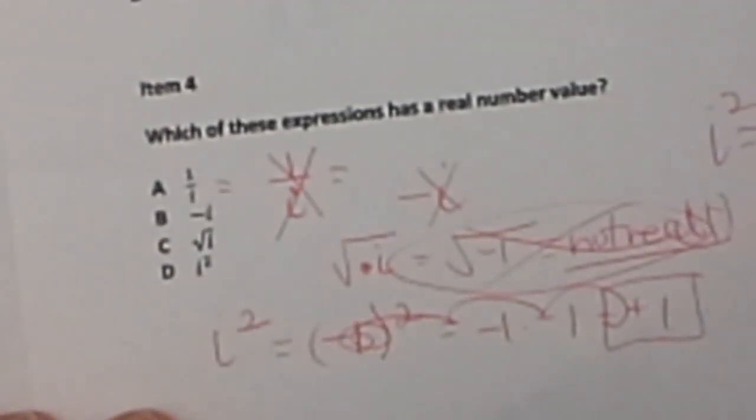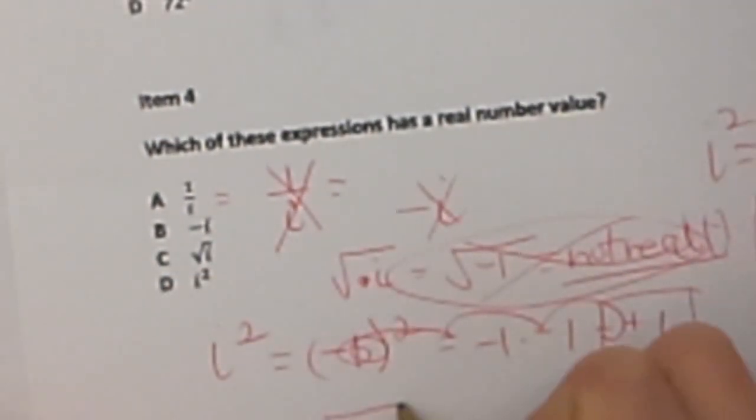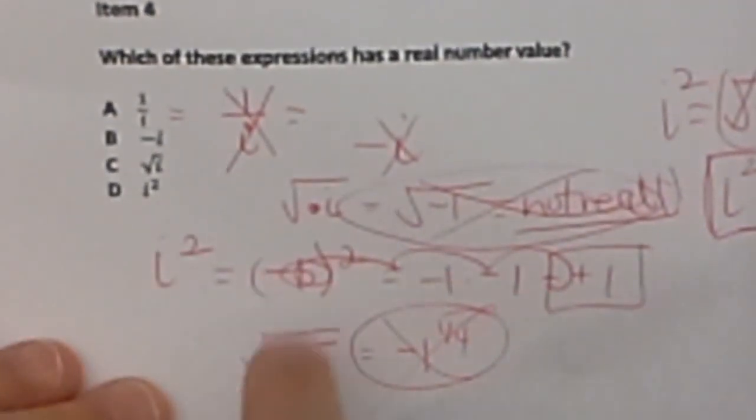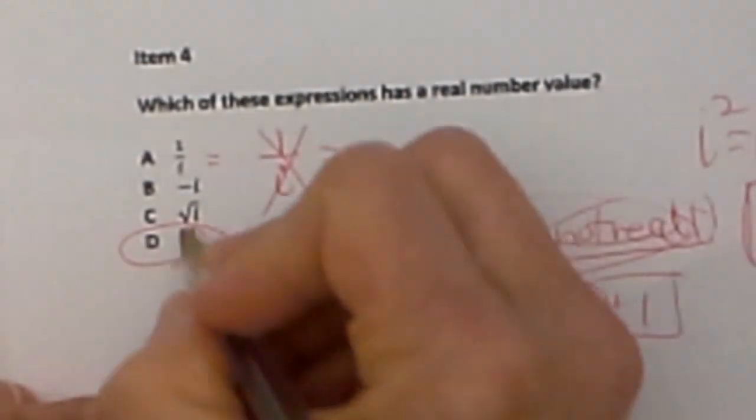So let me go back to C for just a second. To evaluate that, I'm going to take the square root of I, and I is the square root of negative 1. So really we are taking the square root of the square root of negative 1, which is really negative 1 to the 1 fourth power, which we know definitely is not a real answer. So the only choice would have to be D.